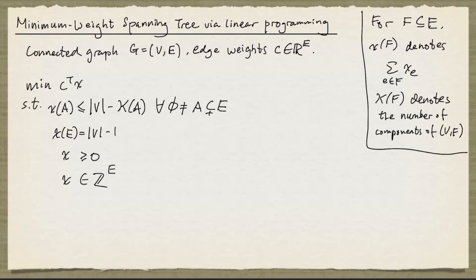A bit of notation to unpack: if F is a subset of E, then X_F denotes the sum of all the entries of X indexed by elements in F. And kappa(F) denotes the number of components of the graph with node set V and edge set F.